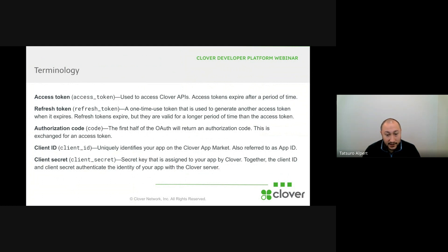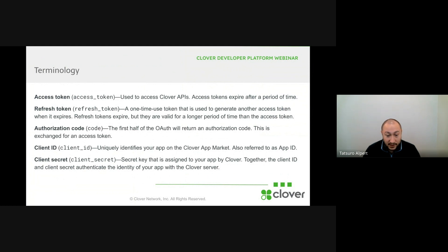Client ID, which is also a current concept, is your app's ID, also sometimes referred to as the app ID. And the client secret is a secret key that is assigned to your app by Clover, and this, again, is something that already exists currently.